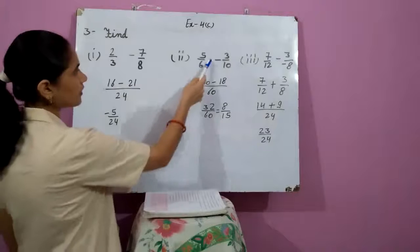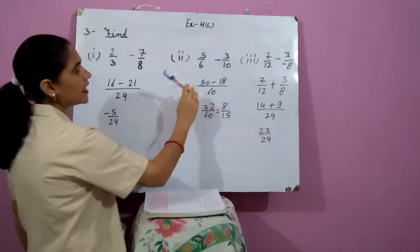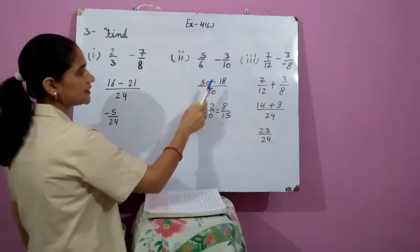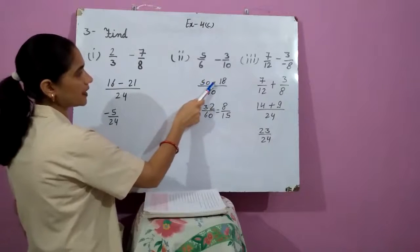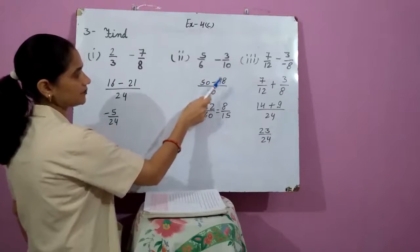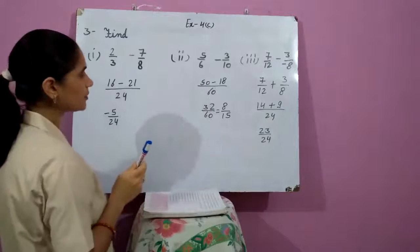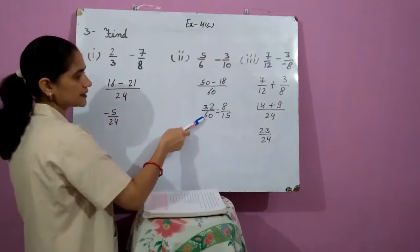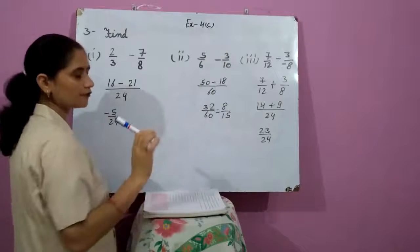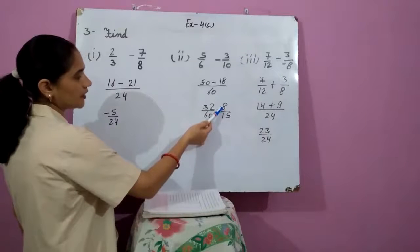Come to the second part: 5 upon 6 minus 3 upon 10. The LCM of 6 and 10 is 30. After the calculation we get 25 minus 9, which is 50 minus 18. So 32 upon 60; both are divisible by 4, and then we get 8 upon 15.